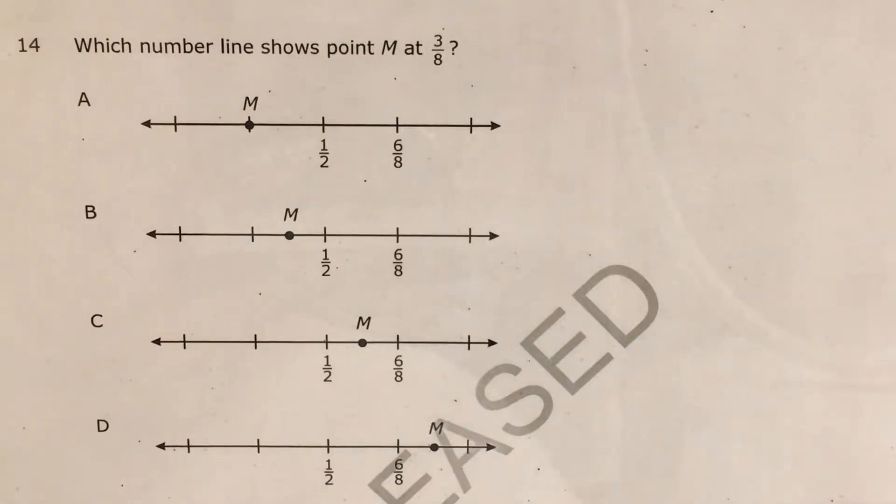What's up, math scholars and math haters? This is Mr. W. Today we're going to tackle question 14 in the third grade math questions that North Carolina released this past school year. The question gives us four answer choices with number lines that all have the same tick marks and the same one-half and six-eighths on them. But point M is different, and we're supposed to figure out which number line shows point M at three-eighths.